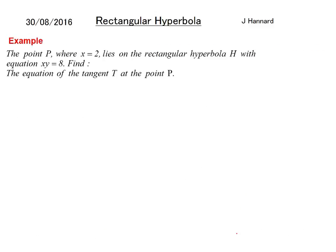So here's an example. Just found this straight away on an FP1 paper. I can't remember the year. But the point p where x equals 2 lies on the rectangular hyperbola h with the equation xy equals 8. Find the equation of the tangent t at the point p. So xy equals 8. But we need y on its own. 8 over x.